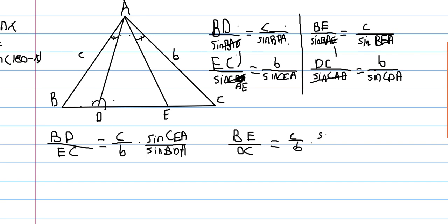So here where we write sine CDA, this and this will cancel since they're supplementary, their sines are equal. And then as we write sine BEA, BEA is supplementary to CEA, and so that will also cancel out.